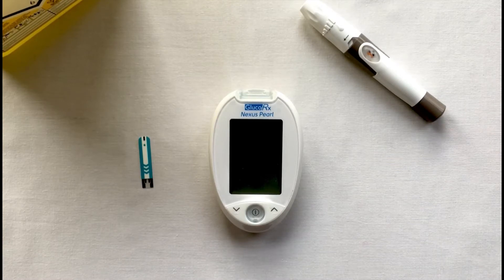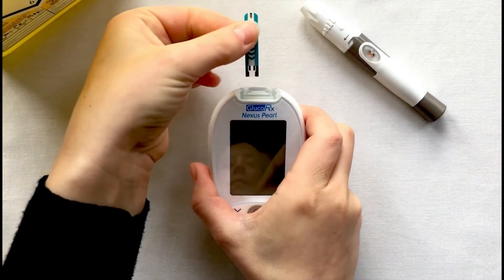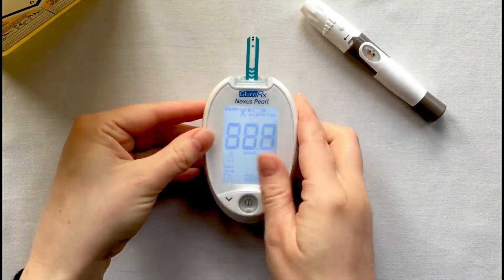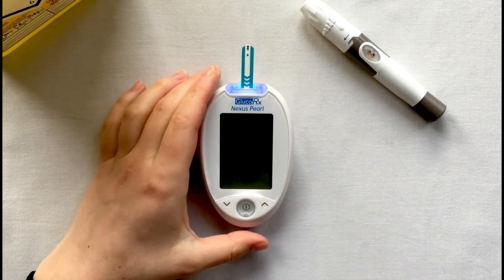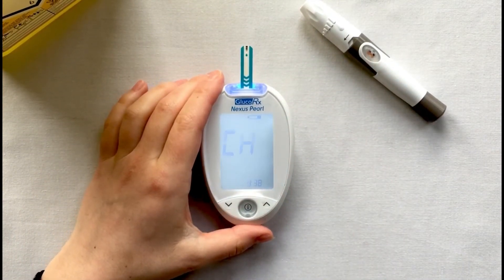Insert your strip into the top of the meter ensuring that arrows are pointing towards the meter. Once the meter is ready to perform a test you will see a flashing blood sample at the top of the screen.